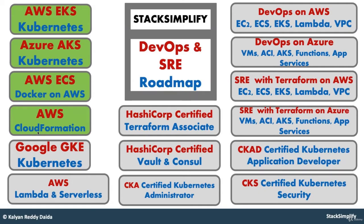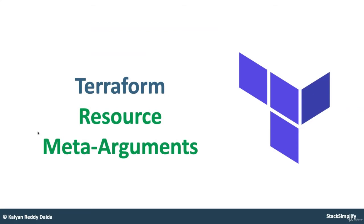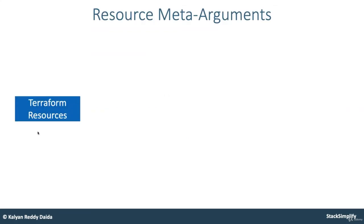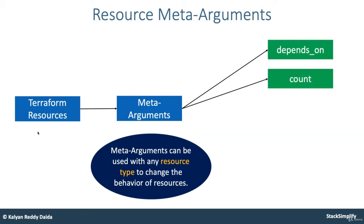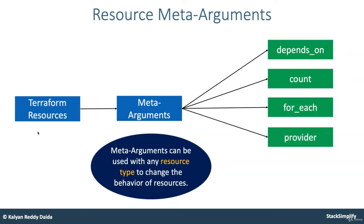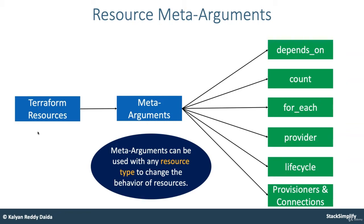Welcome back. In this lecture we are going to understand about resource meta arguments. For resources, there are special arguments present for altering the behavior of the resources — those are called meta arguments. Meta arguments can be used with any resource type to change the behavior of those resources. These include depends_on, count, for_each, provider, lifecycle, provisioners, and connections. These arguments can be defined inside the resources in addition to its own regular arguments for that respective resource.